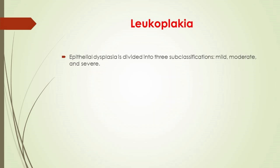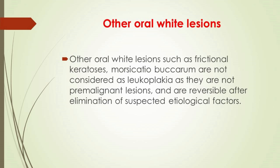Epithelial dysplasia is divided into three subclassifications: mild, moderate, and severe. The presence of epithelial dysplasia is the gold standard for detection of malignant transformation, but there are three major problems: first, the diagnosis is subjective and cannot be standardized; second, not all lesions with dysplasia become malignant — some even regress; and third, in some cases carcinoma develops from lesions without any previous history of epithelial dysplasia. Other oral white lesions such as frictional keratosis and verrucous carcinoma are not considered leukoplakia, are not premalignant, and are reversible after elimination of suspected etiological factors. Candidosis, lichen planus, and leukoedema should not be considered leukoplakia.